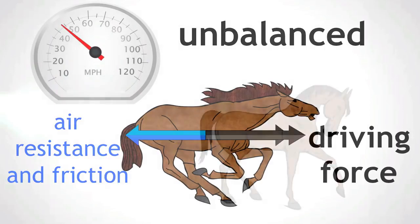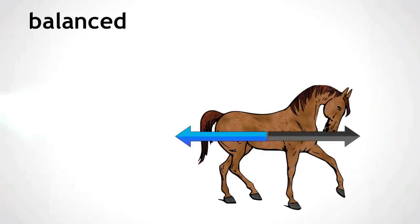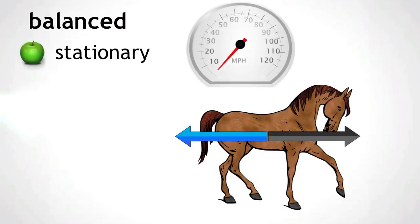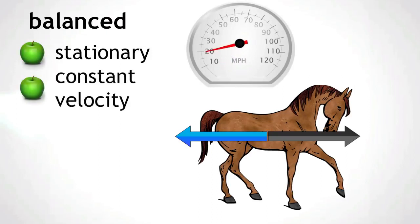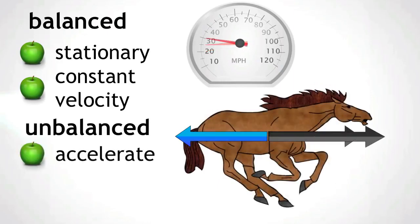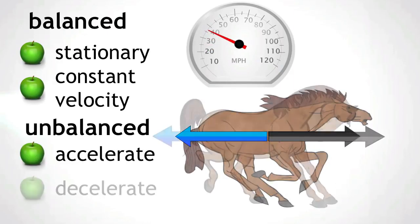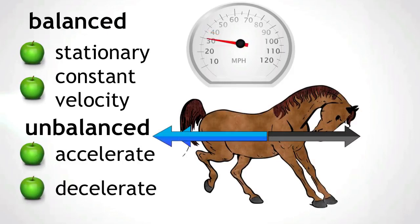So in summary, when the forces are balanced on an object, the object will either remain stationary or travel at a constant velocity. When the forces are unbalanced, the object will either accelerate, meaning an increase in velocity, or decelerate, meaning a decrease in velocity.